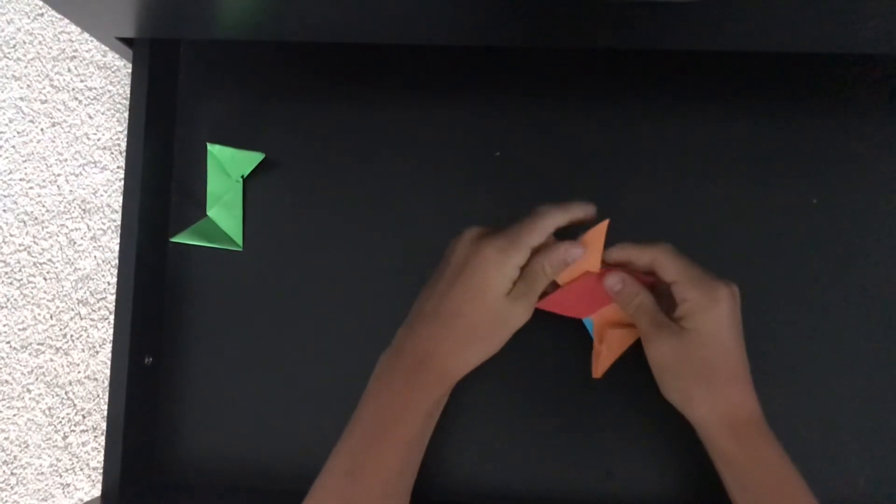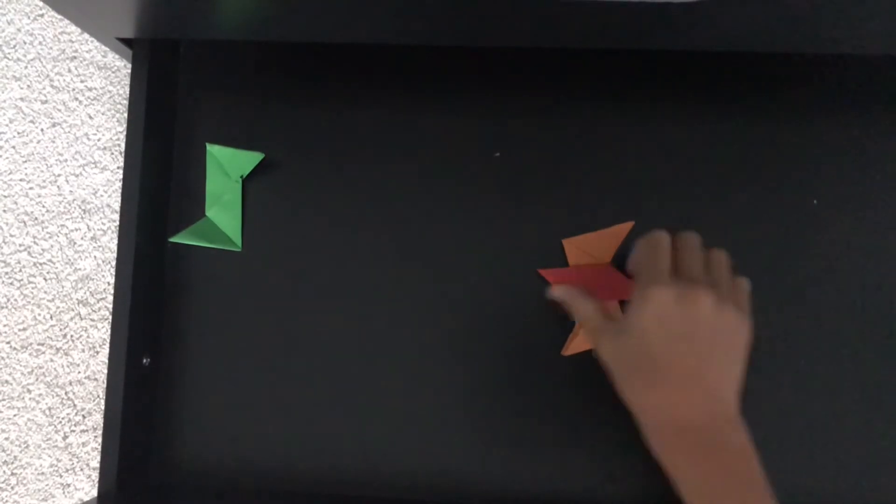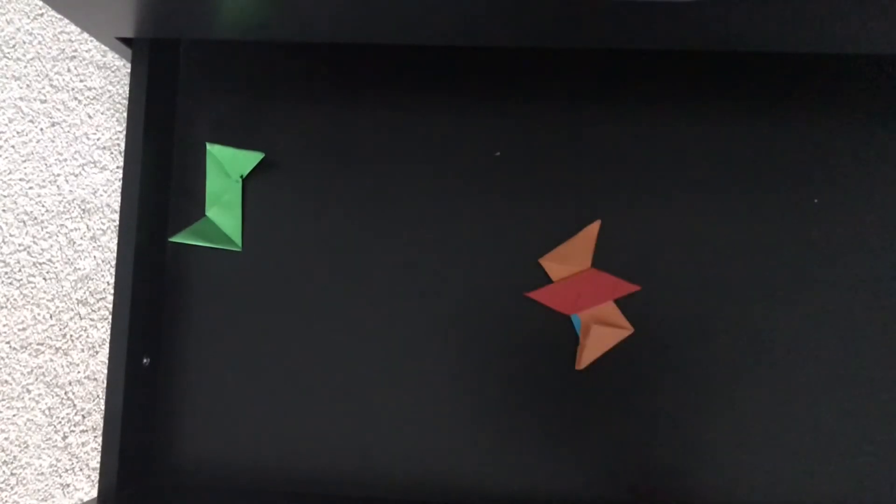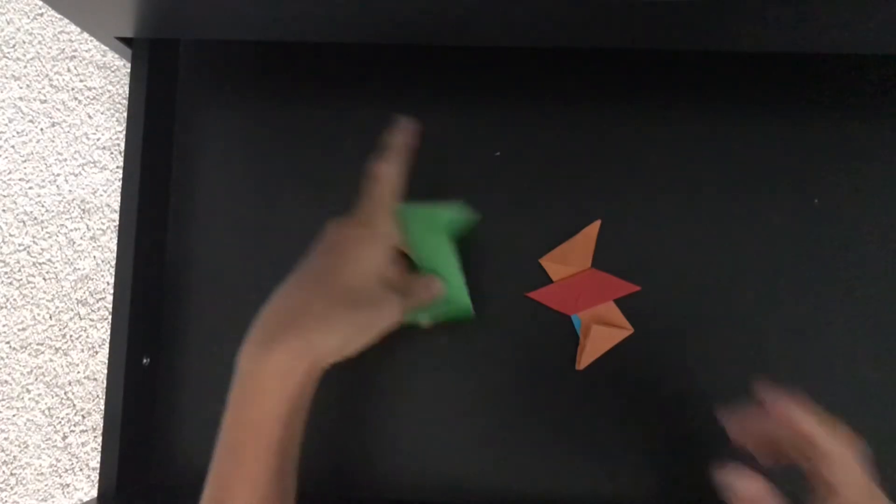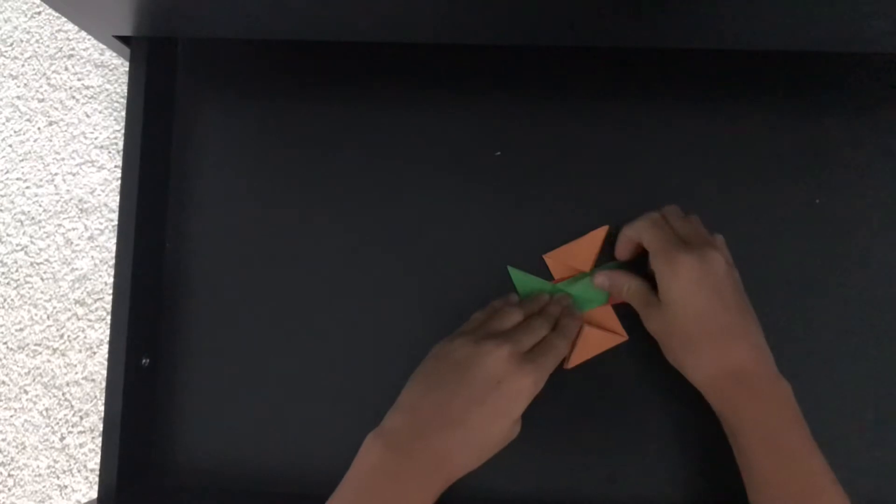And then, do the same thing you did with the first part, with this ninja star, to the second one. Same side. I'm trying to clockwise, make sure it's the one on top. So this one.